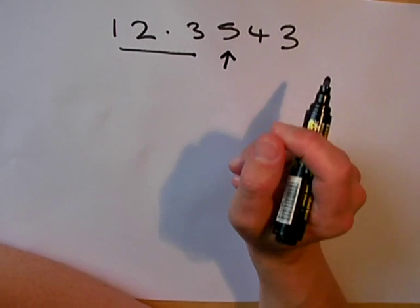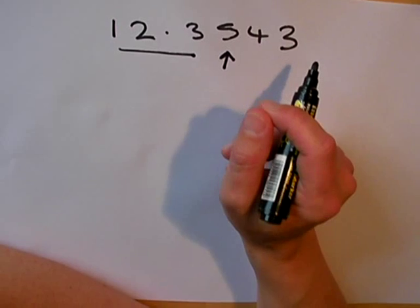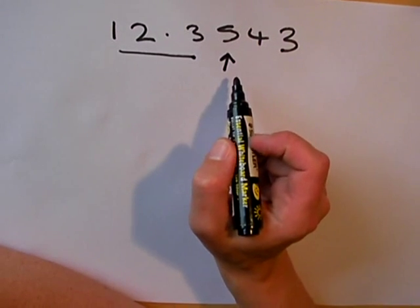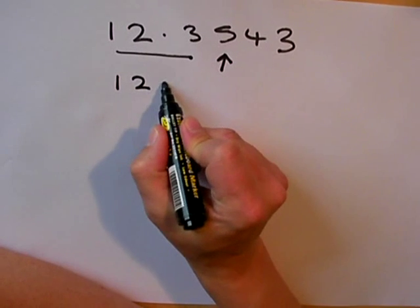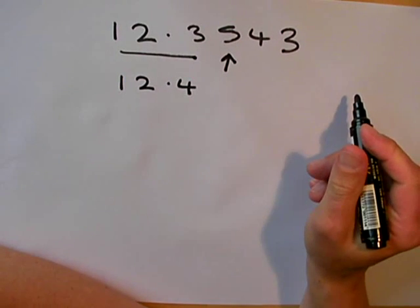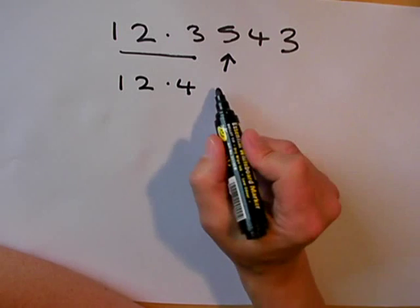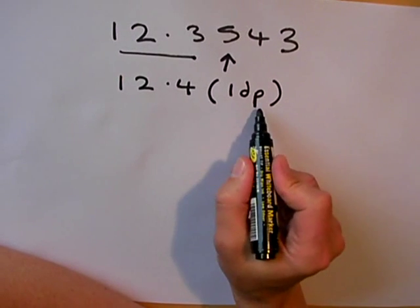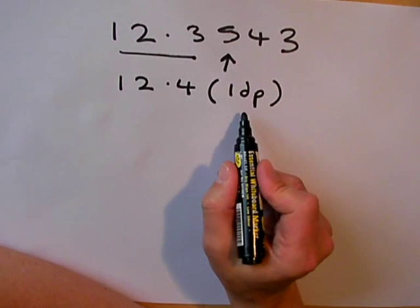Now, if we remember when we're rounding off, if it's 5 or more we round up. So in this particular case, I am going to round up not to 12.3 but 12.4. When I've rounded off to one decimal place, it's a good practice to put 1dp after it. That shows people that you've rounded this number off - it's not the accurate answer, it's the answer after it's being rounded off to one decimal place.